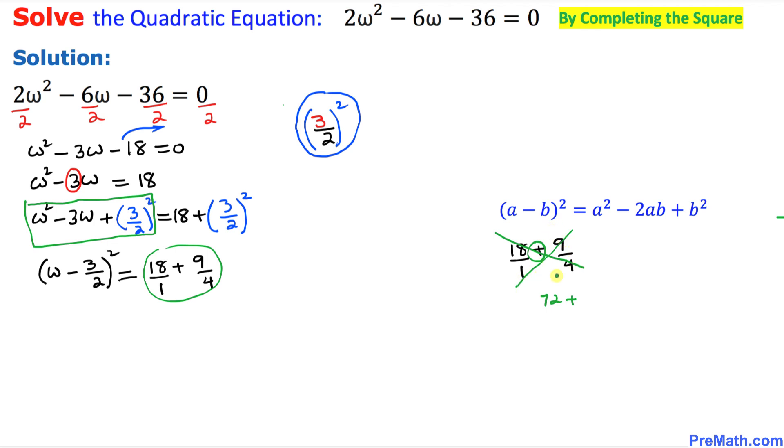Divided by the denominators, 1 and 4, multiply them out, that becomes 4. So 72 plus 9 is going to give us 81/4.